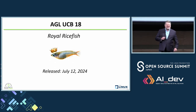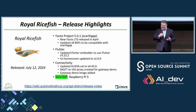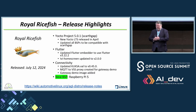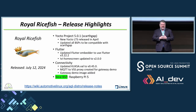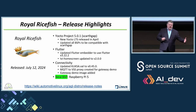We also introduced Royal Ricefish. In Royal Ricefish, we made updates to Yocto, updates to Flutter, and several updates to vehicle signaling. Another cool addition is support for Raspberry Pi 5 — an inexpensive board that any developer can buy relatively cheaply, which really allows another option to run and test AGL.